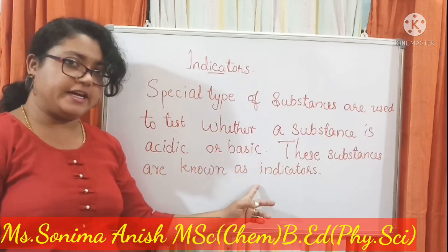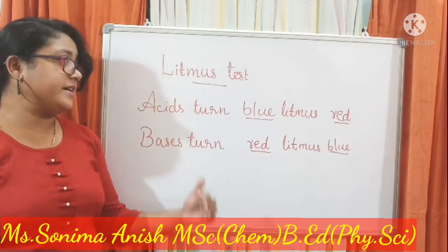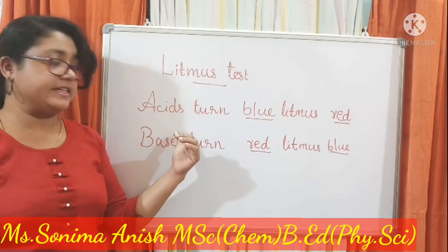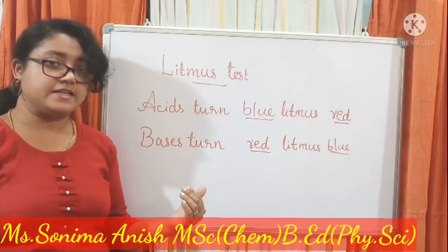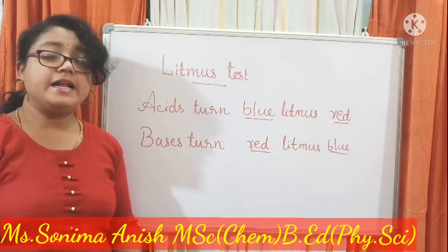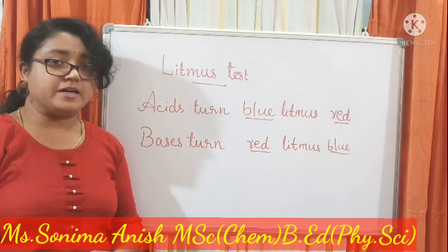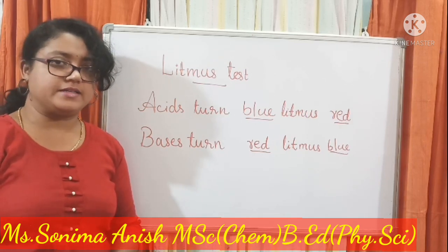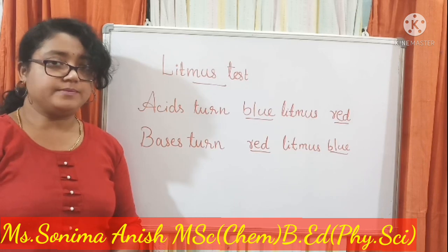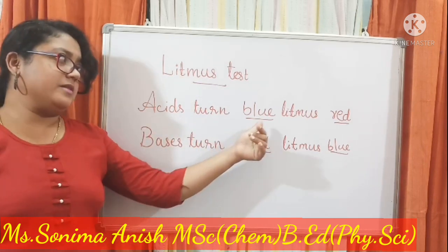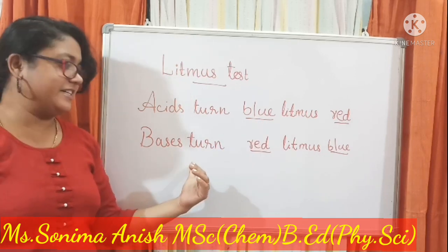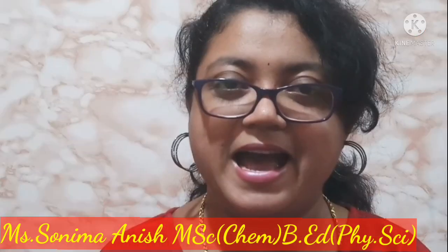These substances are known as indicators. The litmus test is a main indicator test that can be used to find whether the given substance is an acid or a base. Litmus paper is available in two colors: red and blue. Acids turn blue litmus to red, and bases turn red litmus to blue.